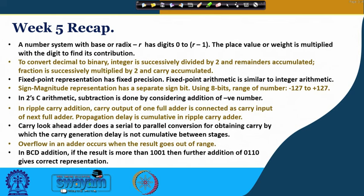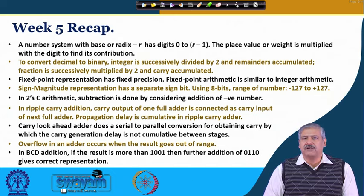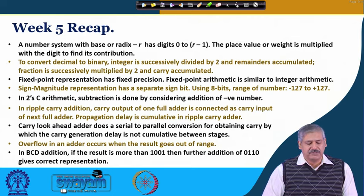We discussed number systems and the representation of numbers in binary. The codes we arrived at were weighted codes, in the sense that every place has got certain weight associated with it. When it is binary, before the binary point we had weights like 1, 2, 4, 8, 16 and so forth. After the binary point it was 1/2, 1/4, 1/8, 1/16 and so forth.